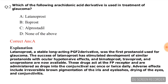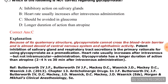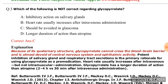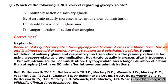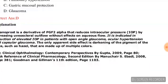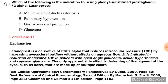Question number three: Which of the following is not correct regarding glycopyrrolate? Options are: inhibitor action on salivary glands; heart rate usually increases after intravenous administration; should be avoided in glaucoma; longer duration of action than atropine. The correct answer is option C, that is 'should be avoided in glaucoma.'